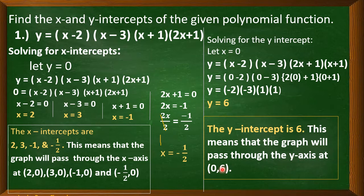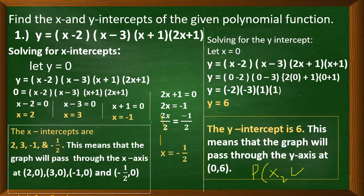This means that the graph will pass through the y-axis at the point (0, 6), since x is equal to 0 and y is 6. Remember a point has x and y coordinates, so we write (0, 6). That was example number 1, where the given function is in factored form — it's very easy to solve for the x and y-intercepts.